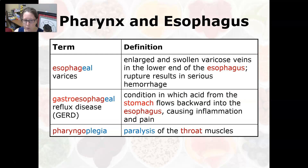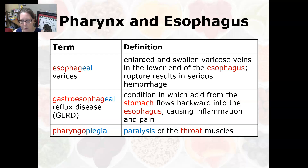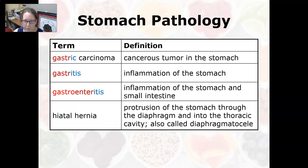Gastroesophageal reflux disease, or GERD, is a condition in which acid from the stomach flows backward into the esophagus, causing inflammation and pain — it causes heartburn. Pharyngoplegia is a paralysis of the throat muscles.